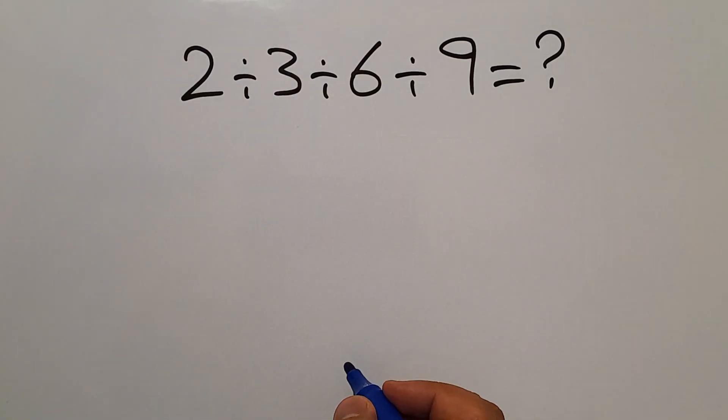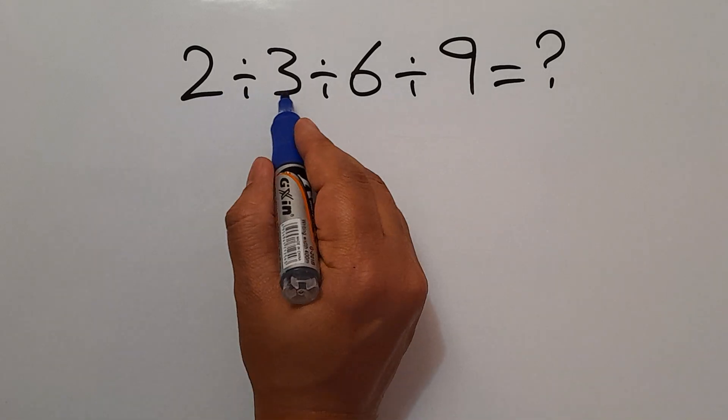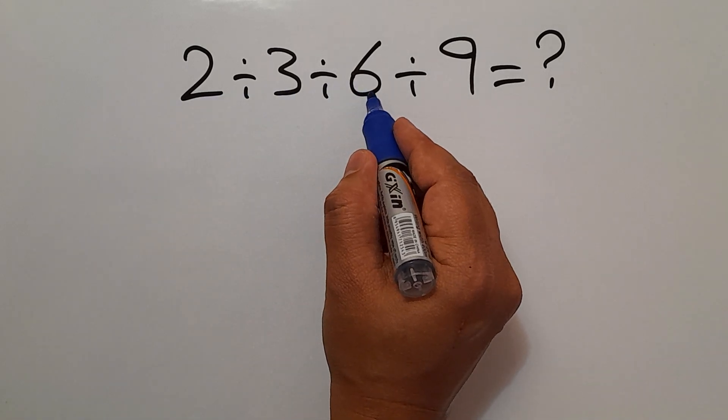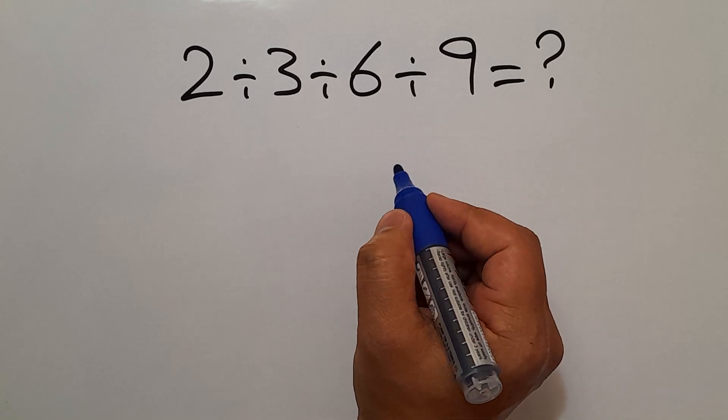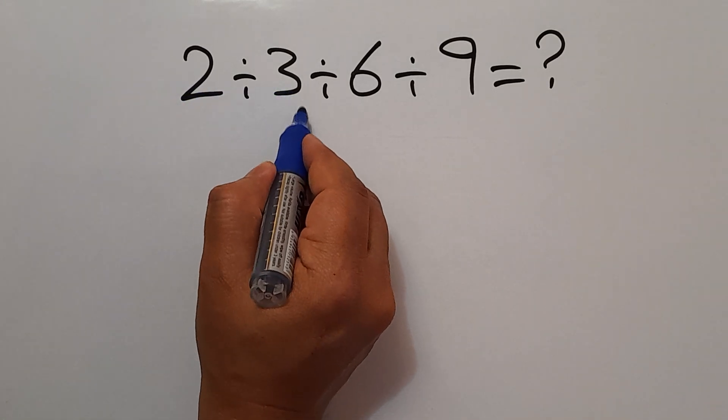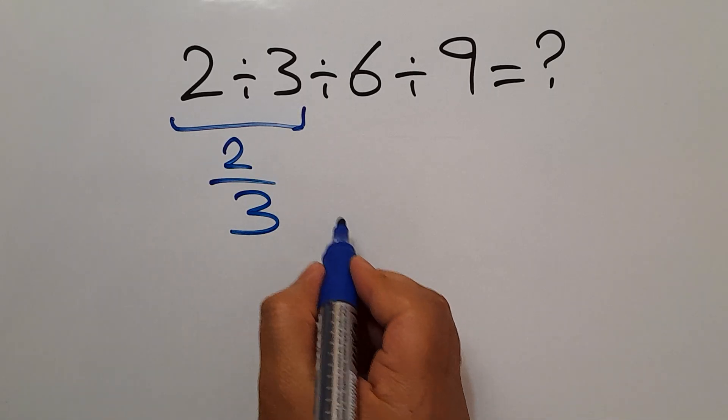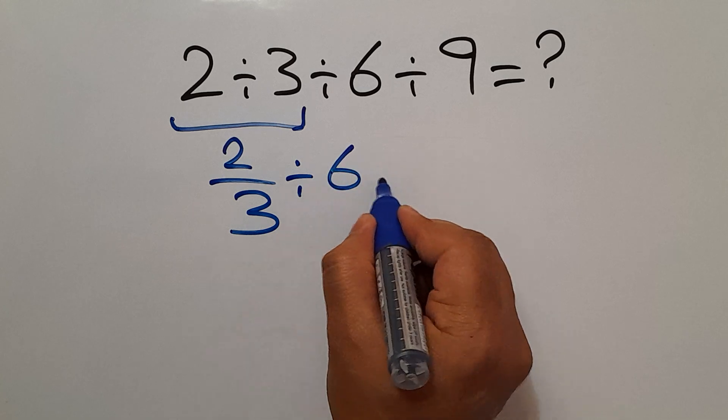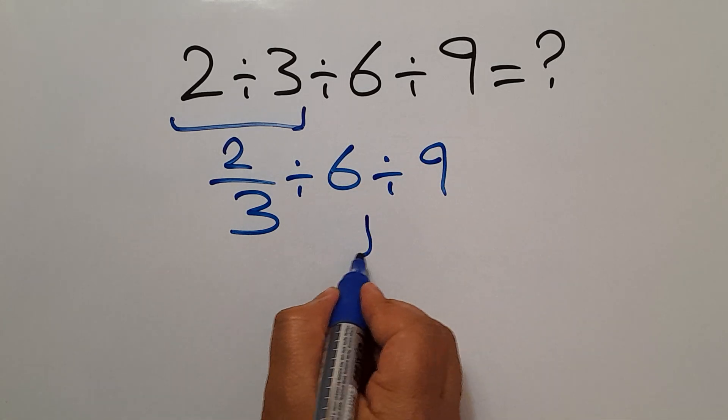Hey guys and welcome to this video. In this video we want to calculate this expression: 2 divided by 3 divided by 6 and divided by 9. Are you ready to solve? Let's go ahead and get started. 2 divided by 3, we can write 2 over 3, then divided by 6 and divided by 9.